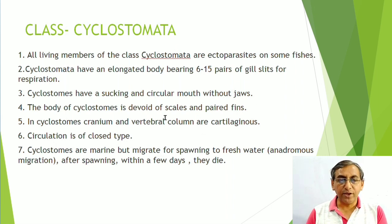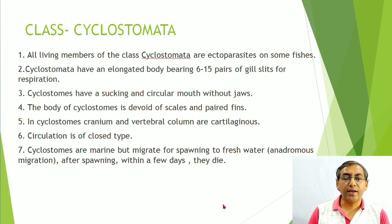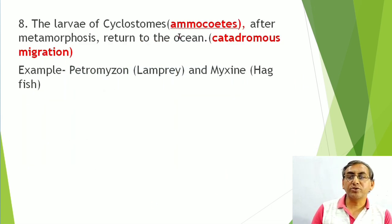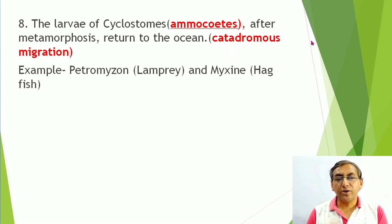Body of cyclostomes is devoid of scales and paired fins. Cranium and vertebral column are cartilaginous. Circulatory system is closed. They are marine but migrate: adult Petromyzon is marine but migrates to freshwater for spawning — this is anadromous migration. After spawning they die within a few days. The larva is the ammocoetes larva. After metamorphosis, it returns to the ocean — this is catadromous migration.